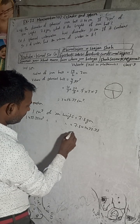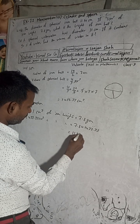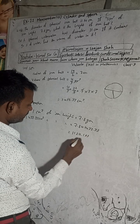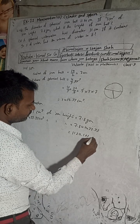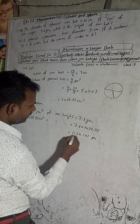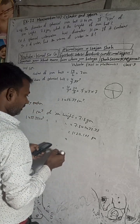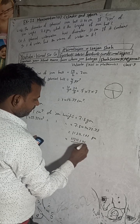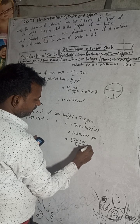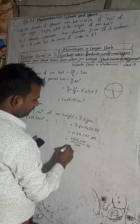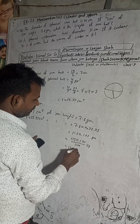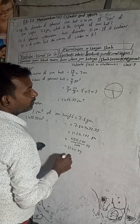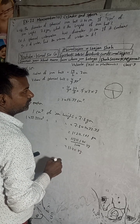This gives us 11,211.199 grams. Dividing by 1000 to convert to kilograms: 11,211.199 ÷ 1000 = 11.21 kg. So the answer is 11.21 kg.